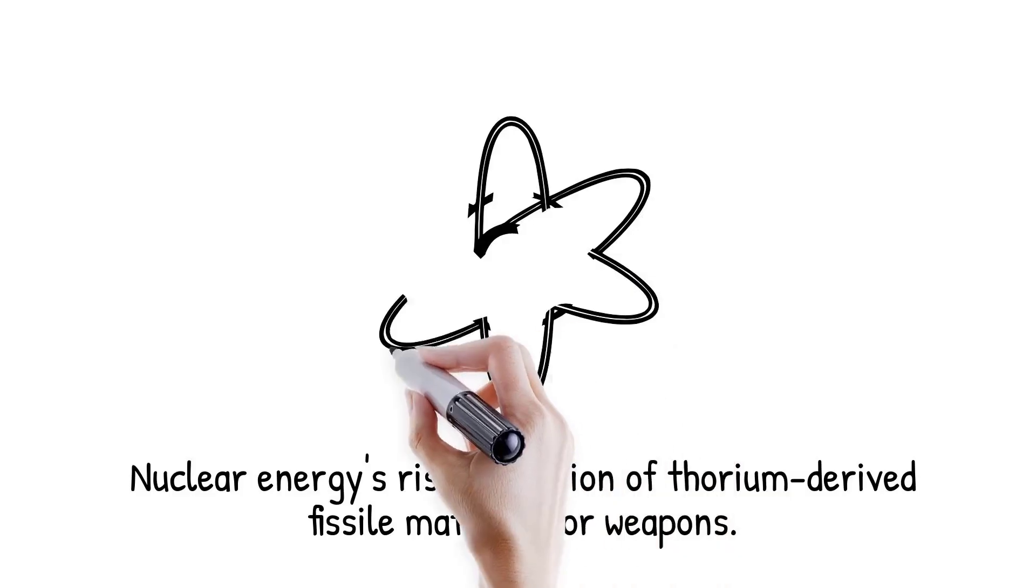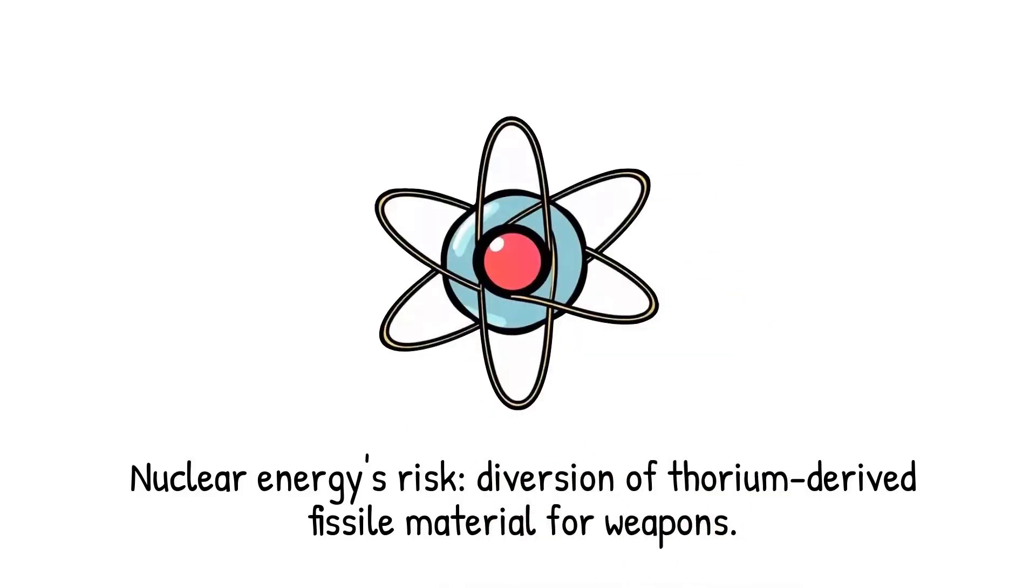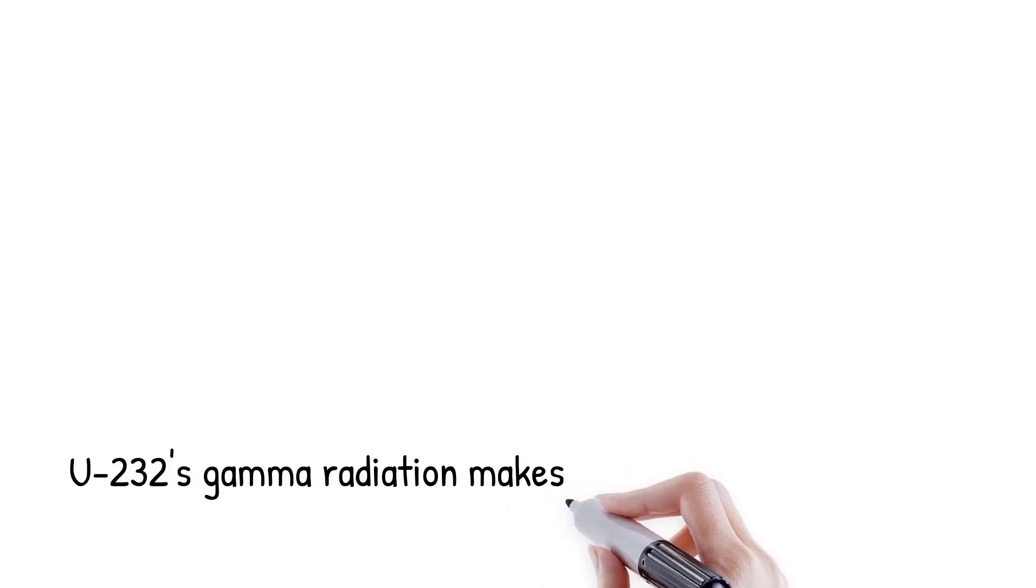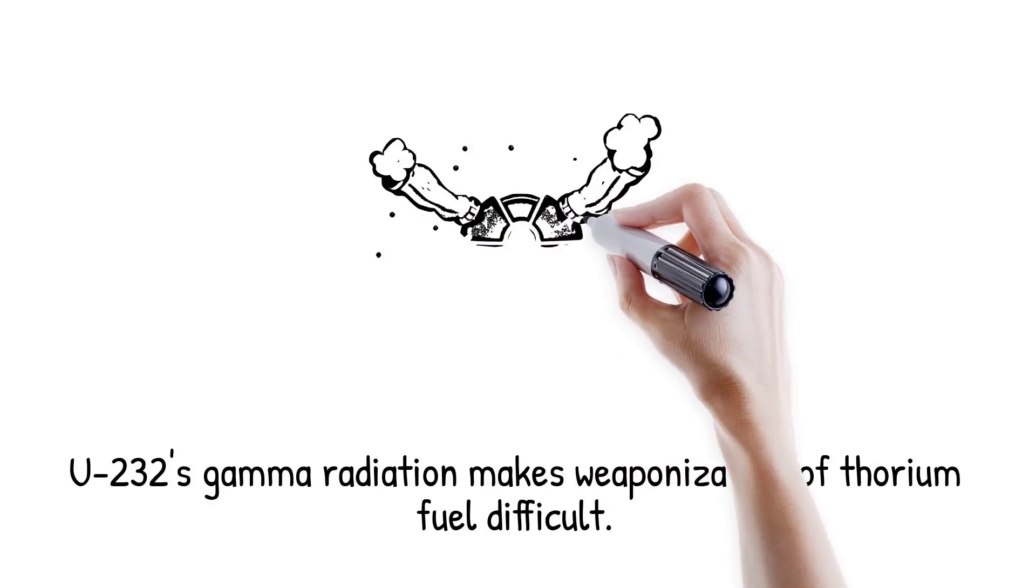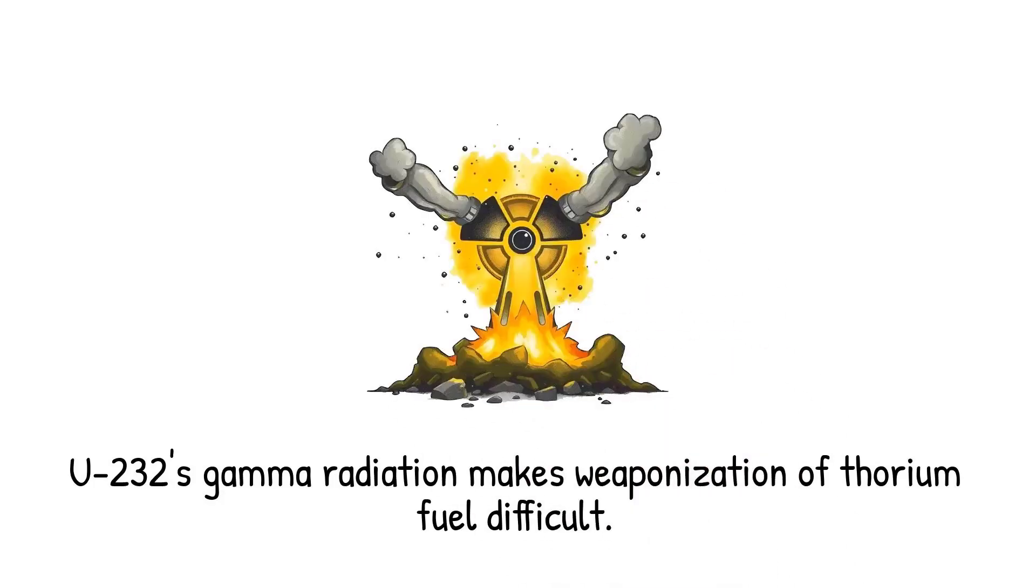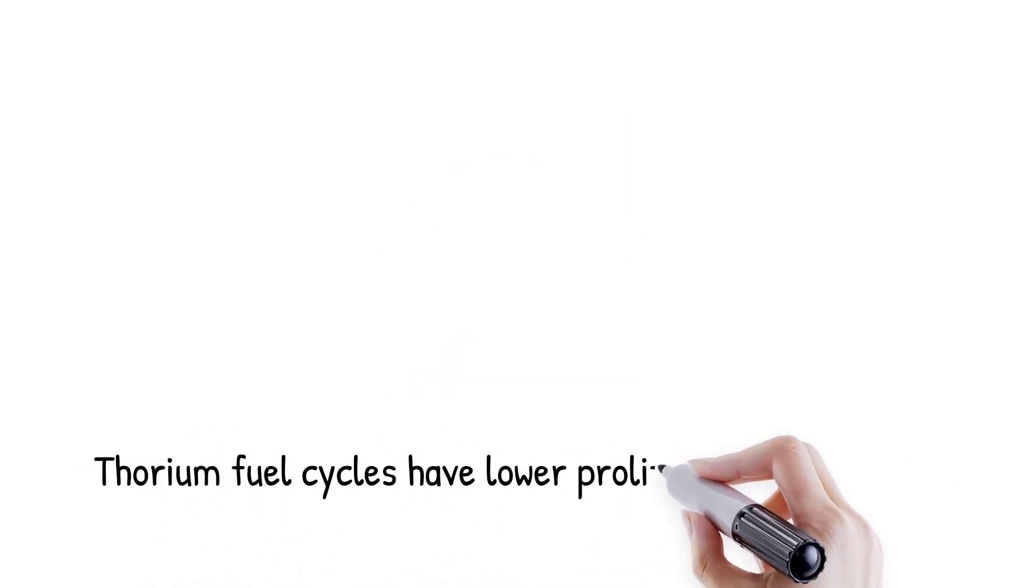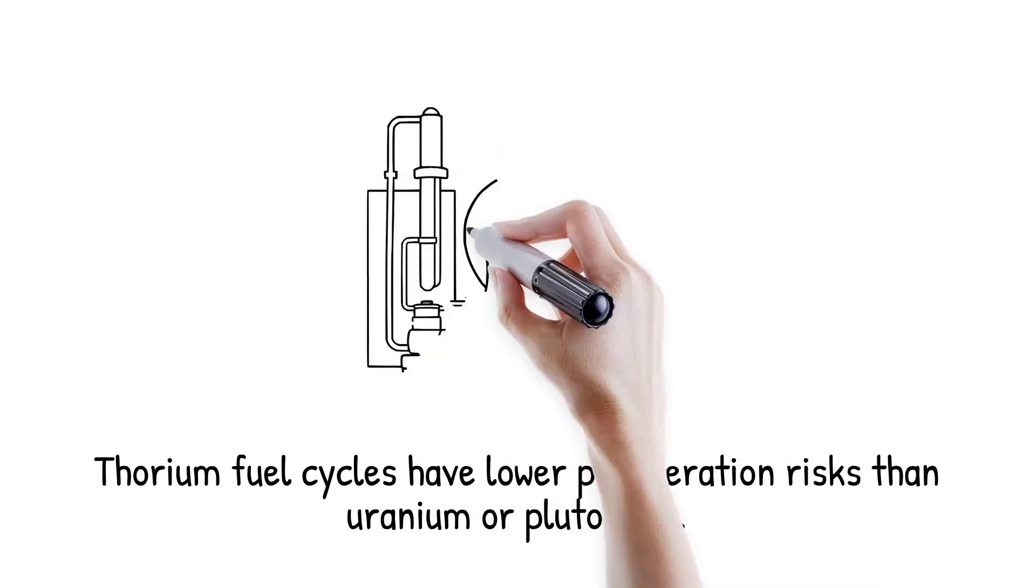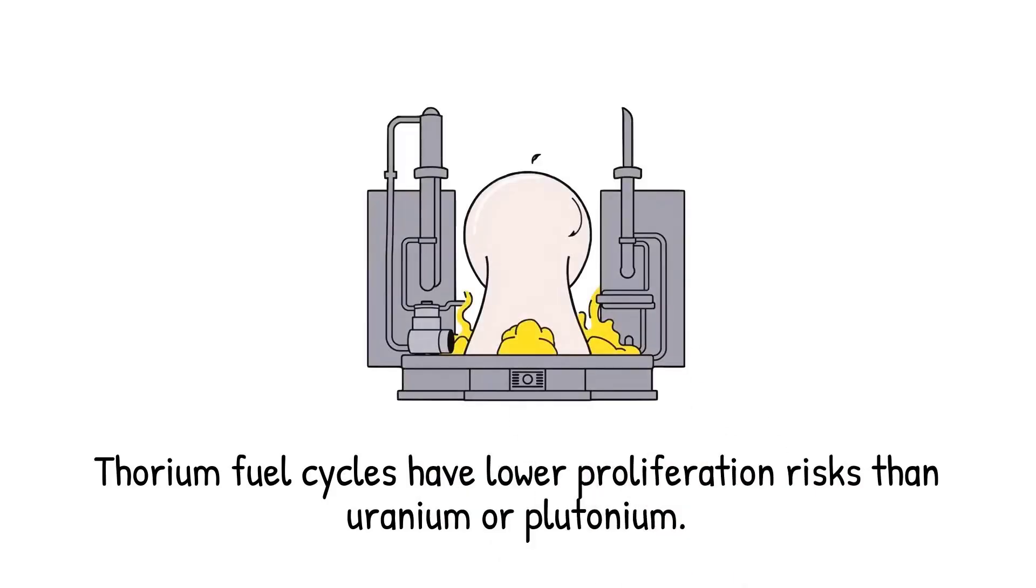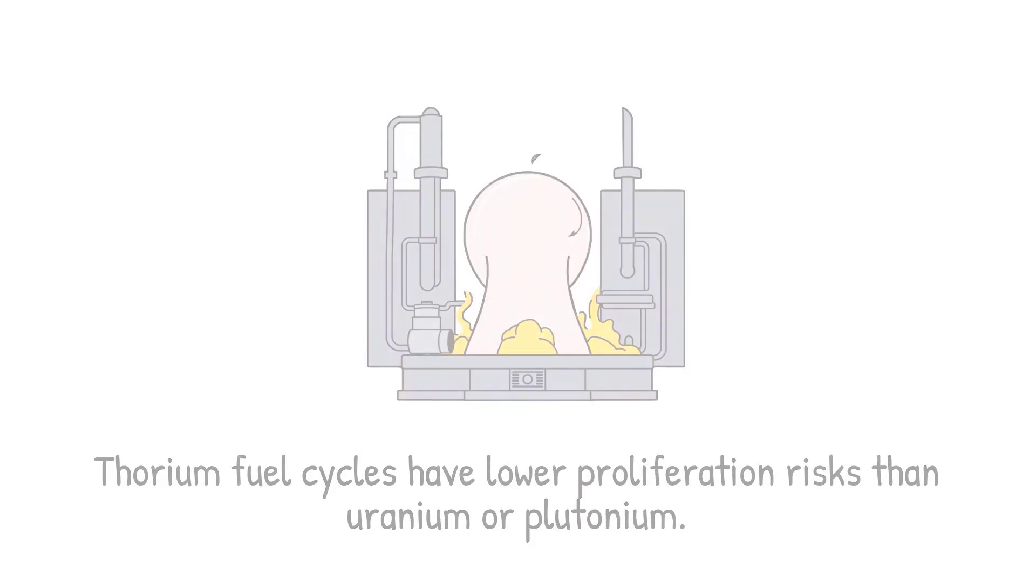A major concern with nuclear energy is the diversion of fissile material into weapons. While uranium-233 can theoretically be weaponized, its production from thorium often includes uranium-232 impurities. Uranium-232 emits intense gamma radiation, making it hazardous to handle and easily detectable. This contamination complicates weaponization, discouraging its misuse. Compared to uranium-235 or plutonium-239, thorium fuel cycles present far lower risks of proliferation. This is why thorium is considered a safer global energy option in political terms.